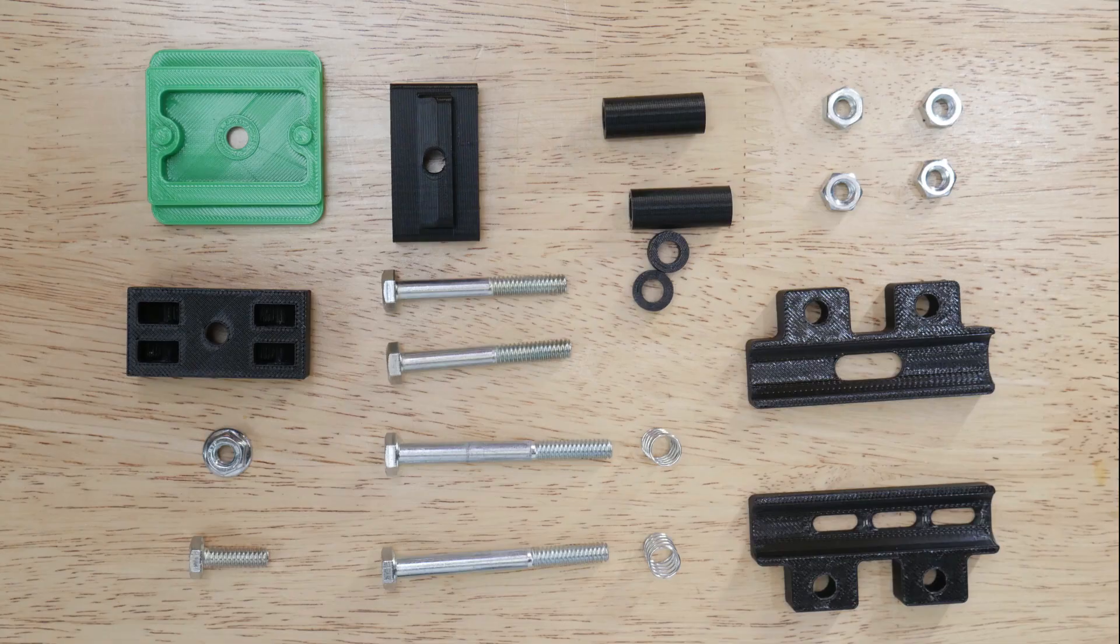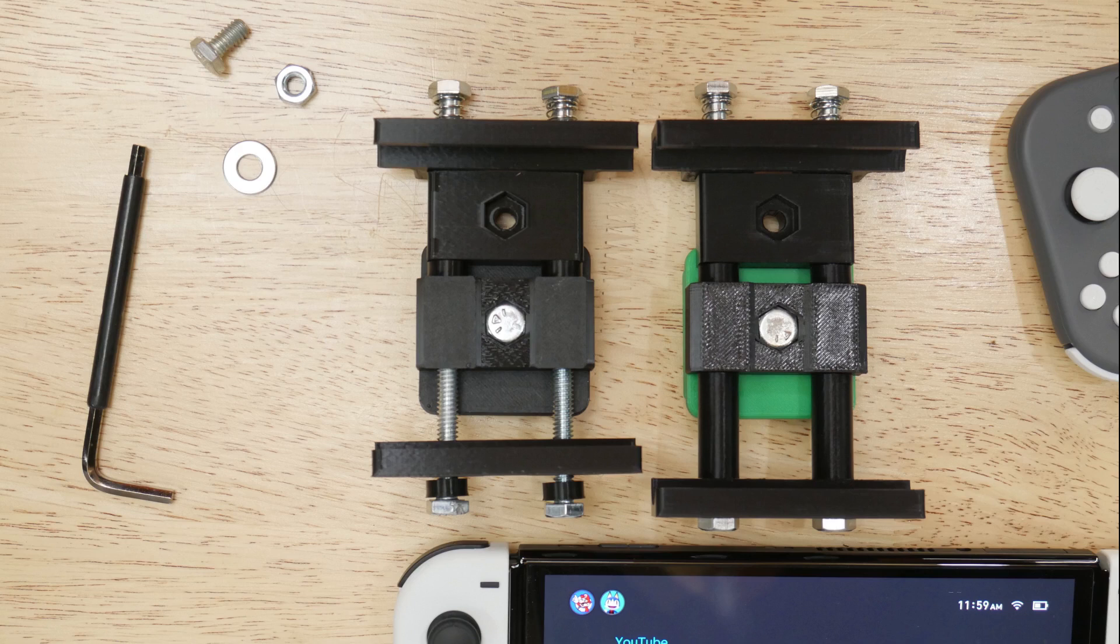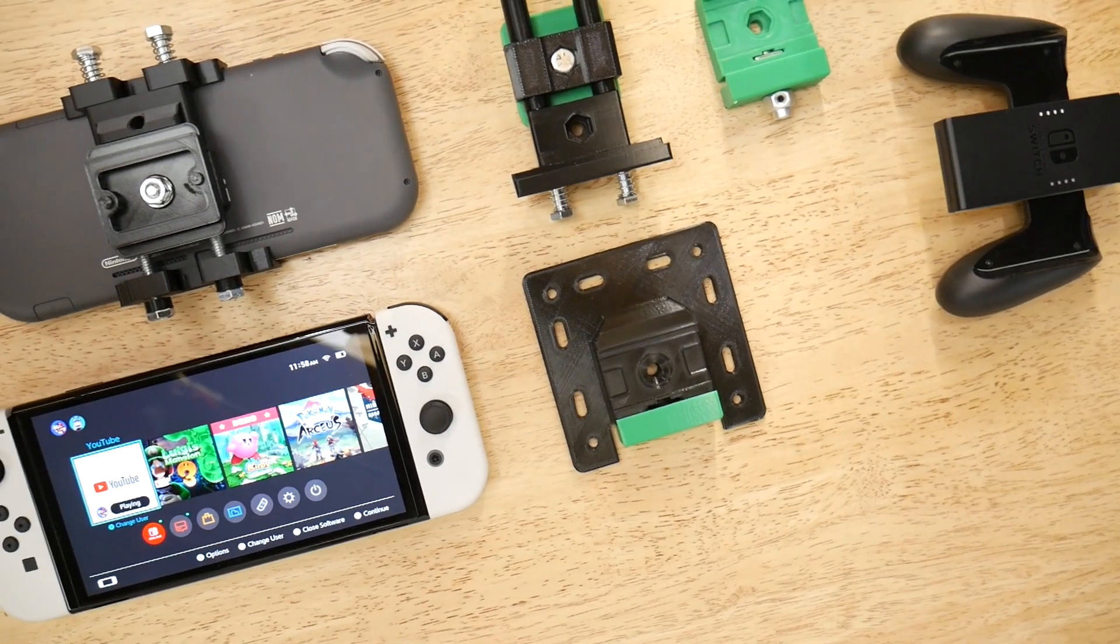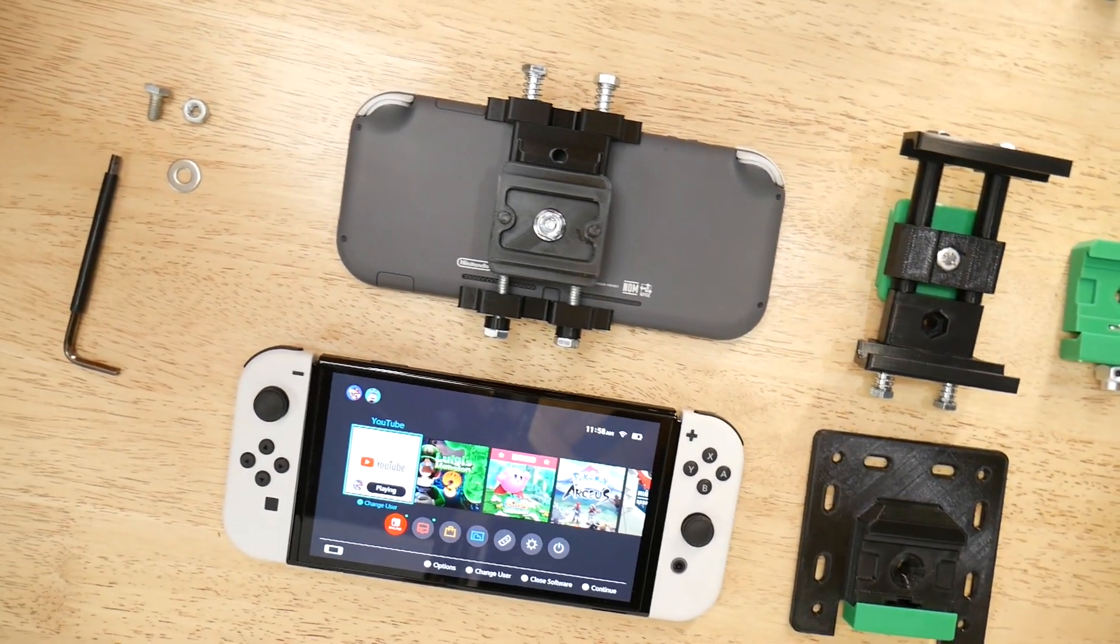The core parts here are quarter 20 hardware solely because this is the thread size for camera mounts. Using different lengths of bolts allows the builder to achieve a universal clip to fit whatever hardware thing you want to mount. Tablet, phone, switch, switch lite, and so on.